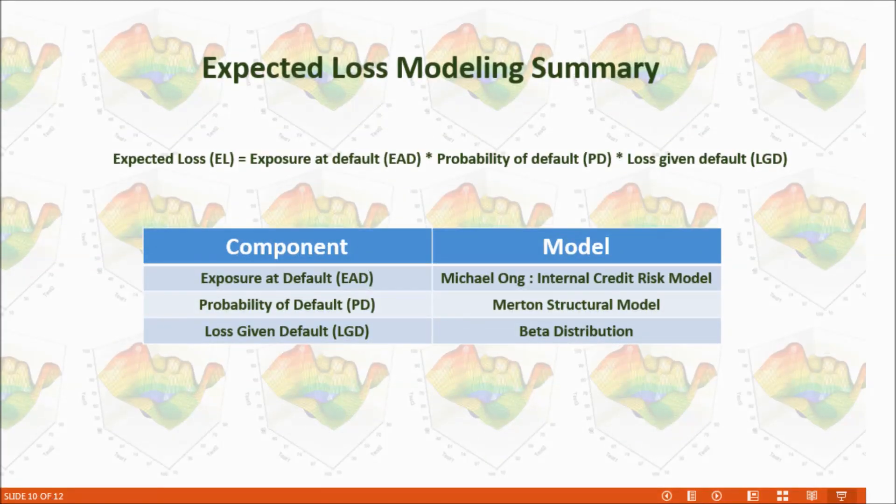In summary, we calculated expected loss by modeling exposure at default, probability of default, and loss given default. For exposure at default, we use Michael Ong's internal credit risk model. For probability of default, we use Merton's structure model. For loss given default, we use beta distribution.